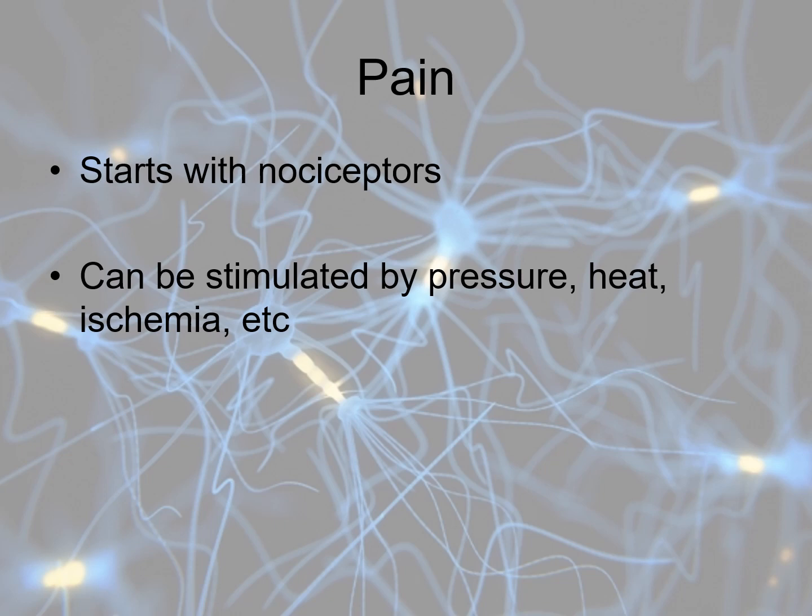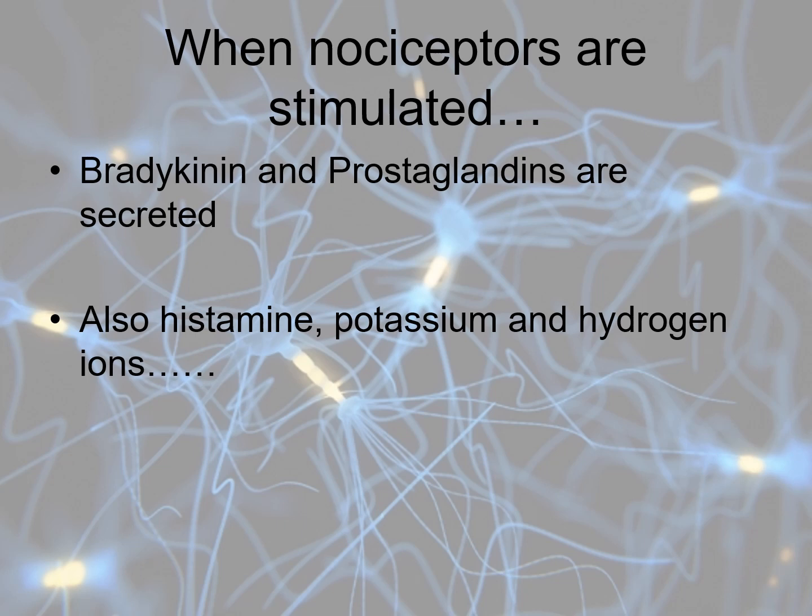When you have pain, it normally starts with nociceptors — some stimulation of a nerve receptor in the periphery, which can be stimulated by pressure, heat, or decreased blood flow. When a nociceptor is stimulated, bradykinin and prostaglandins are secreted. These are both very important because they represent ways we might be able to interrupt the pain sequence. Histamine, potassium, hydrogen ions, and other things also change.